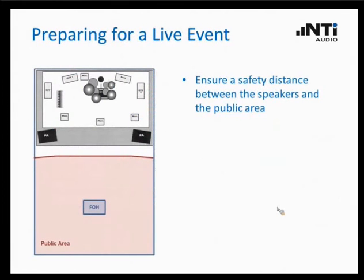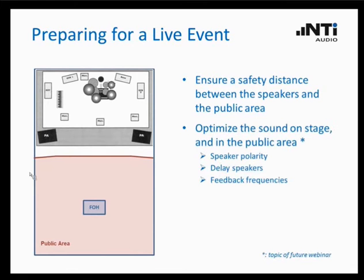Now we are coming to preparing a live event. When we set up our PA system, we have to make sure there is a safety distance between the line arrays and the zone where the public is located. We also have to take care that the sound on stage for the musicians is adjusted properly, and of course for the public as well. This includes verifying the polarity of the speakers, adjusting the delay of the delay speakers if there are any, and cancelling feedback frequencies. This is a wide field with many things to be done, and we will cover that in a future webinar.